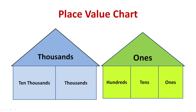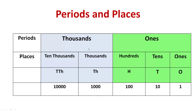It means we have two periods: ones period and thousands period. Under these periods, the members are named as places. In the ones period, we have ones, tens, and hundreds as places. In the thousands period, we have thousands and ten thousands. We can write these places in short forms: for ones, capital O; for tens, capital T; for hundreds, capital H; for thousands, TH; for ten thousands, TTH.